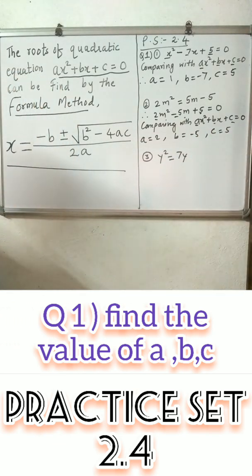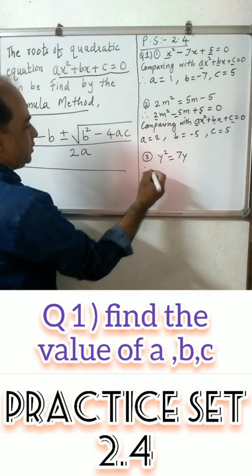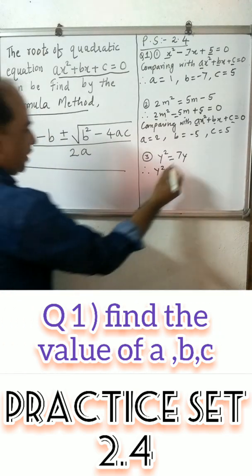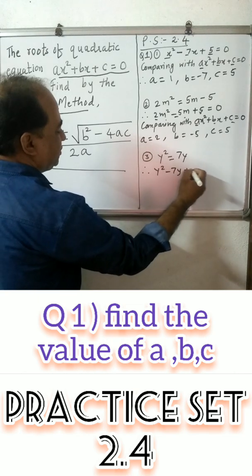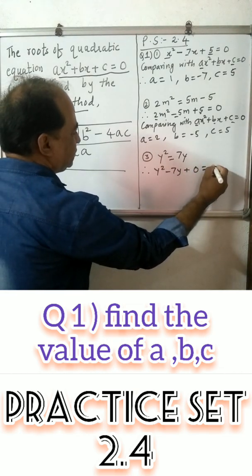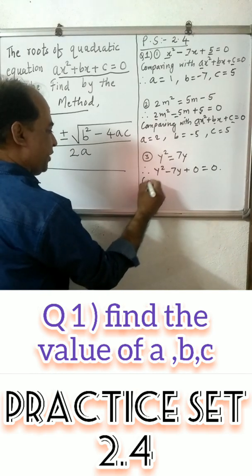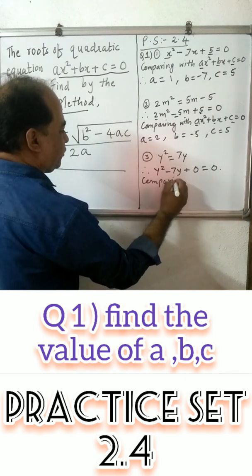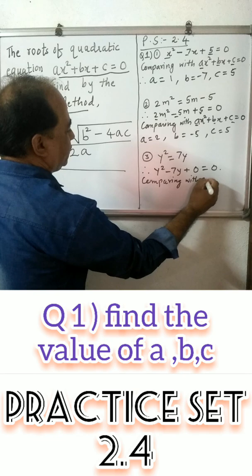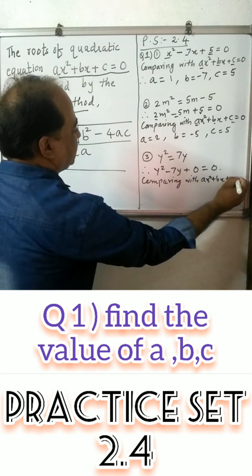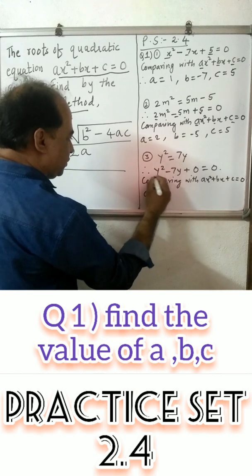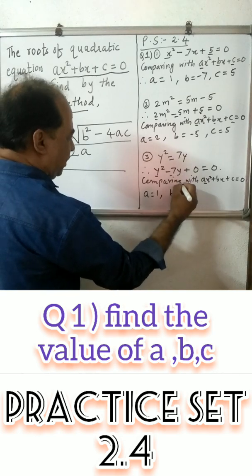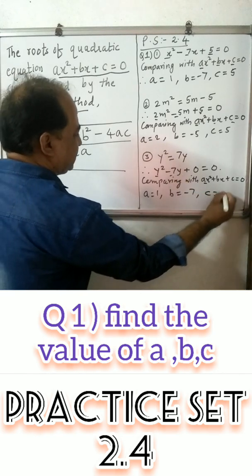Third example is also not in standard order, so first we will bring it into standard form. The equation is in variable y: y² minus 7y is equal to 0. There is no constant term, so c is 0. Comparing with x² + bx + c = 0, we get: a is equal to 1, b is equal to minus 7, and c is equal to 0.